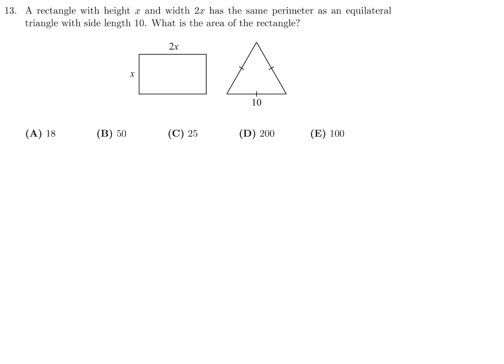A rectangle with height x and width 2x has the same perimeter as an equilateral triangle with side 10. What is the area of the rectangle? The perimeter of that rectangle is 2x plus x plus 2x plus x, which is 6x. And they're telling me that is the same as the perimeter of the equilateral triangle.